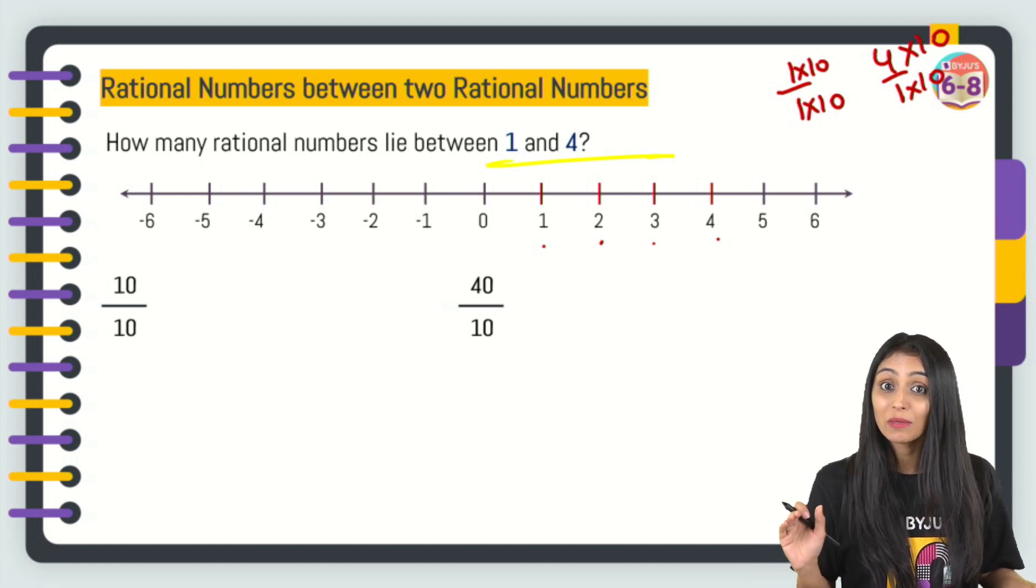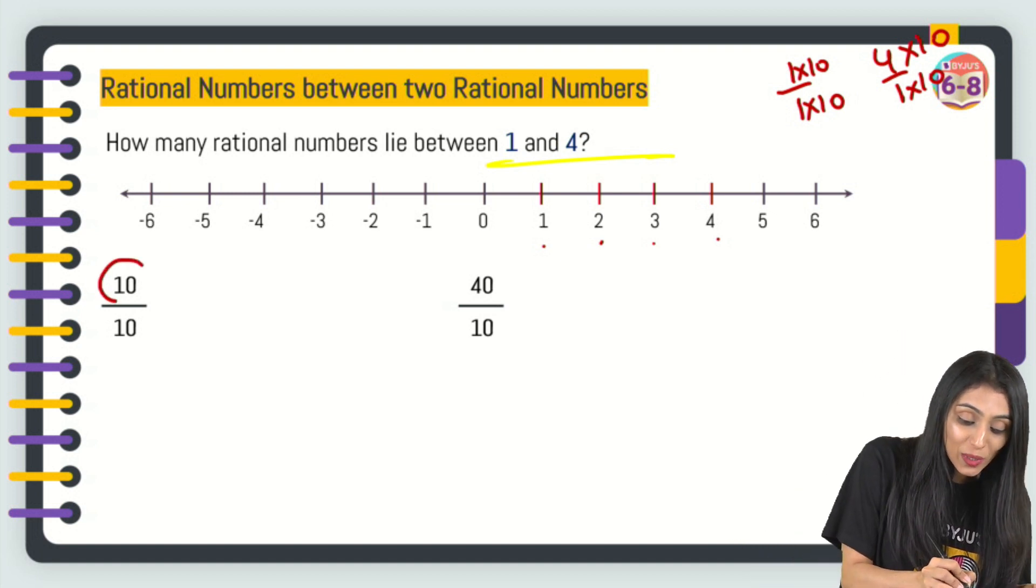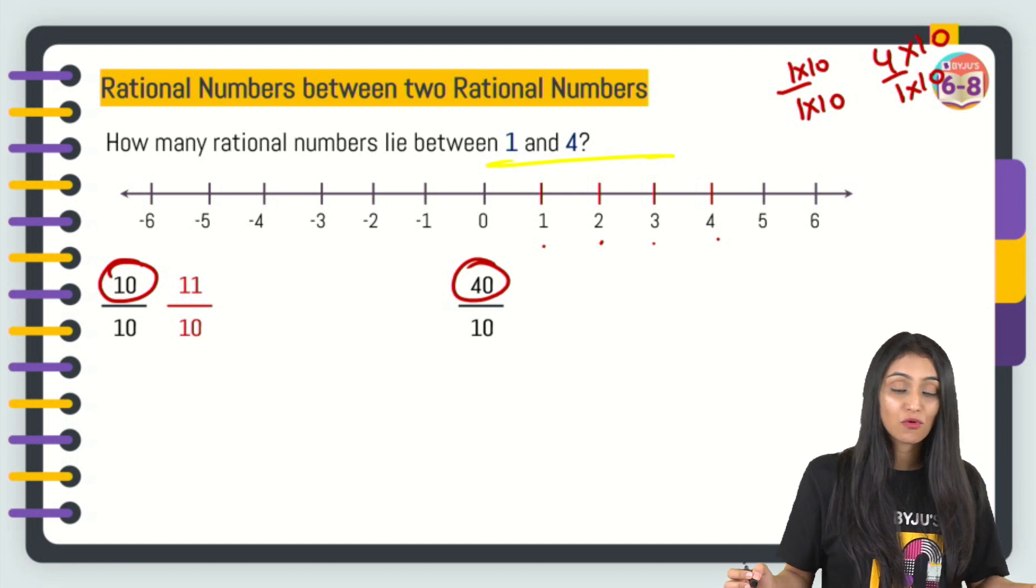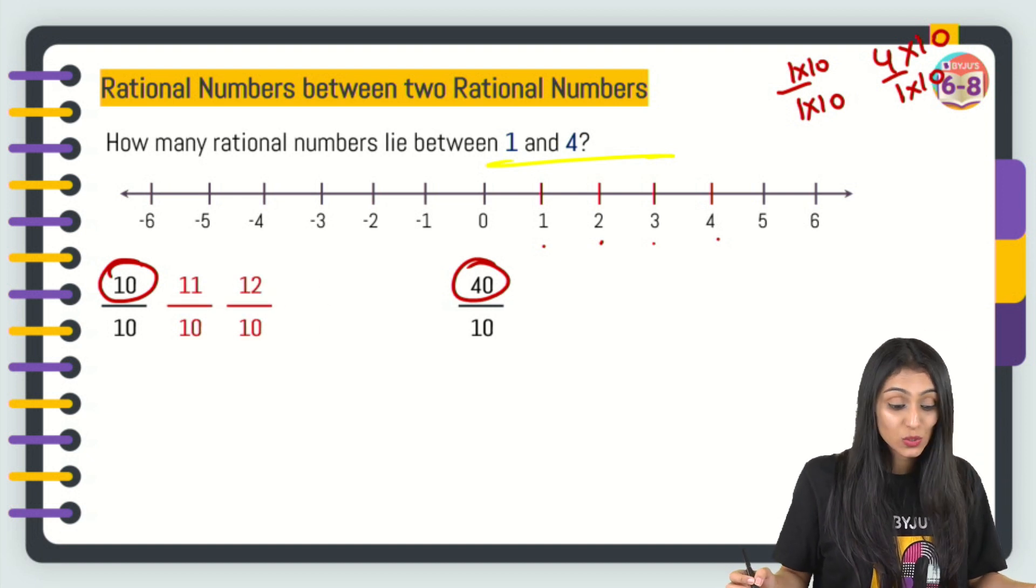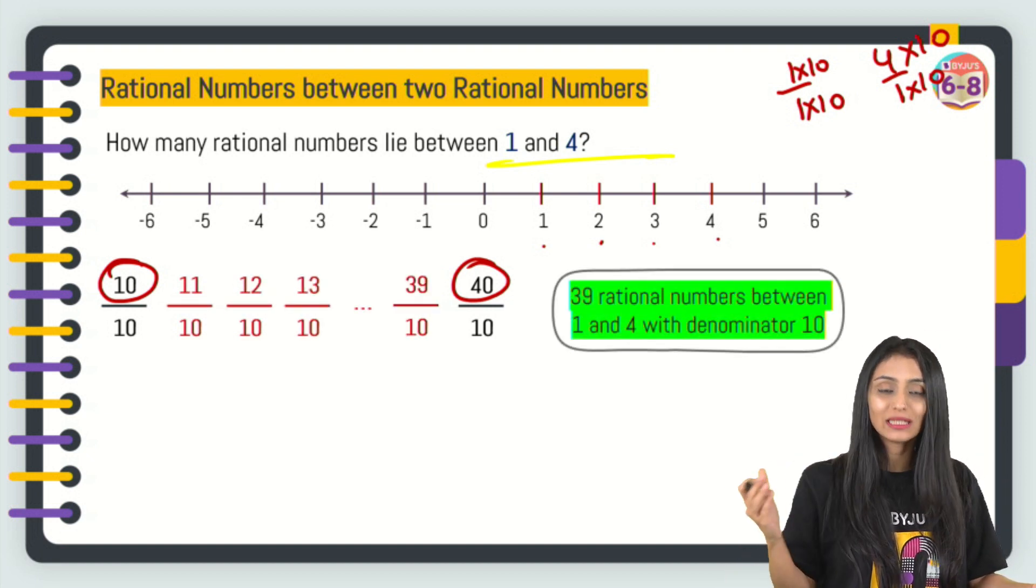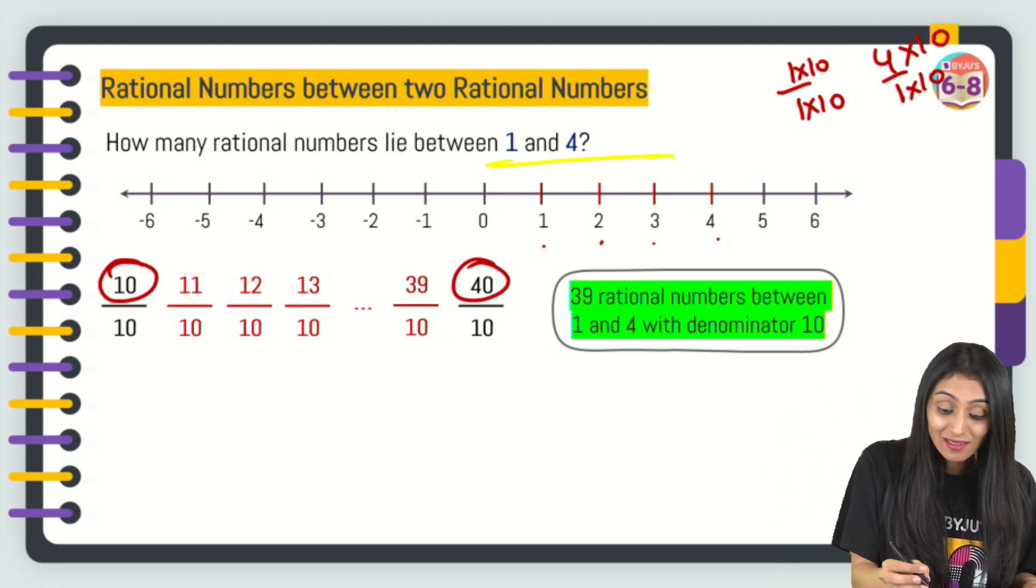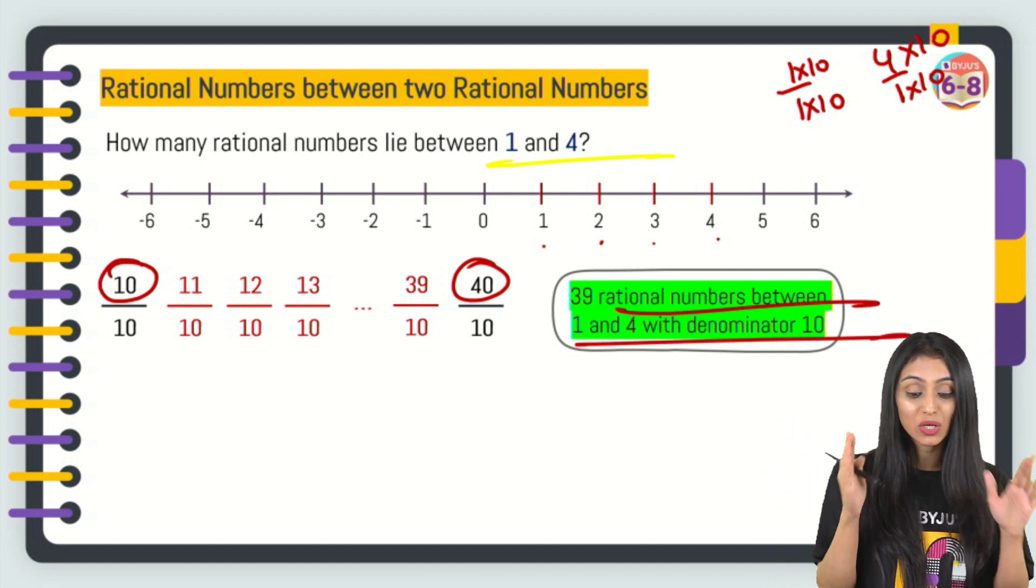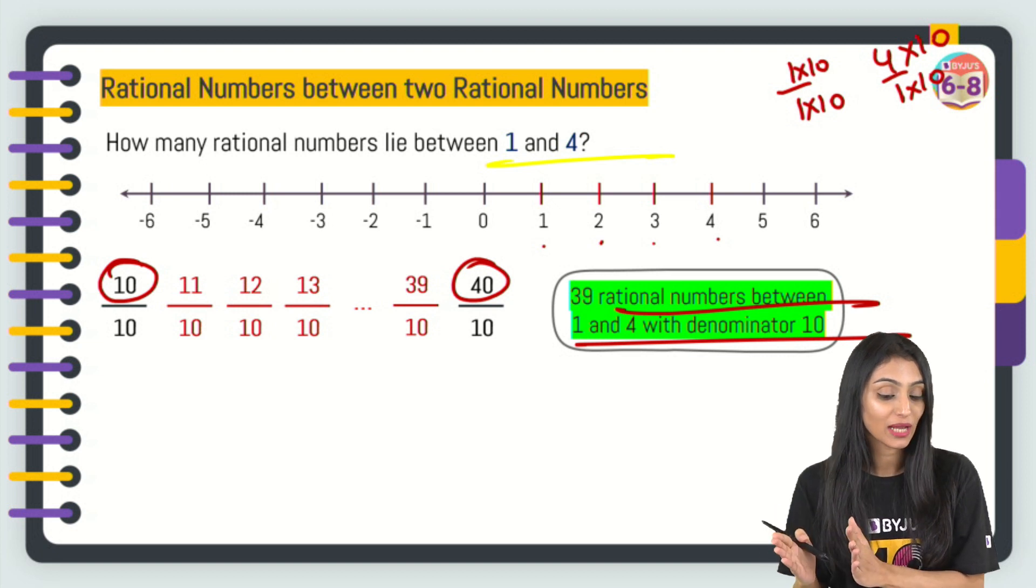Now, both of them have got the same denominator. Just look at the numerators. Between 10 and 40, we have got 11 by 10, 12 by 10, 13 by 10, so on till 39 by 10. So, we can say that 39 rational numbers are in between 1 and 4 with denominator 10.